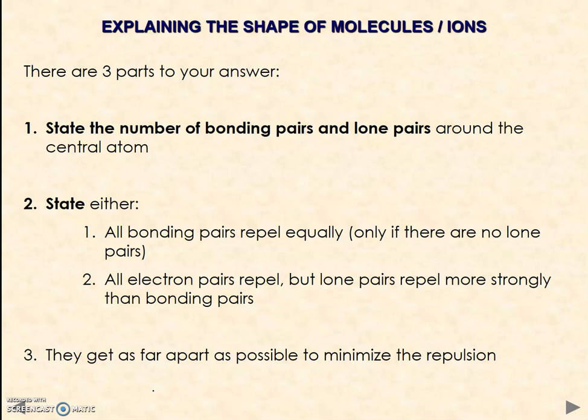Then, if you've got bonding pairs only, you would state all bonding pairs repel equally. However, if you're in a situation where you do have some lone pairs, then you would say instead: all electron pairs repel, but lone pairs repel more strongly than bonding pairs. That usually gets you a second mark. And then finally, the electron pairs get as far apart as possible to minimize the repulsion. Always have those three elements in your answer.